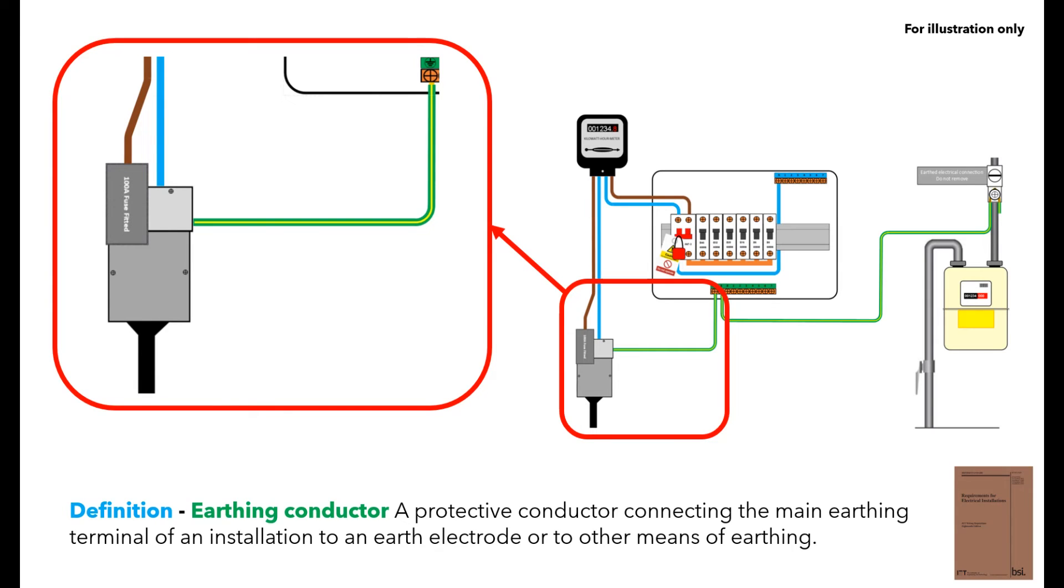BS-7671 gives the following definitions and describes the earthing conductor, which is the cable that either comes from the DNO's TNS or TNCS supply or from an earth rod into the distribution board, sometimes wrongly referred to as the main earth, which is often one of the wrong answers in an exam.